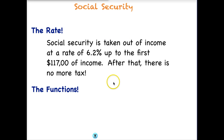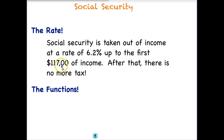Let's look at the rate. You've looked this up in a previous lesson, but the Social Security rate is taken out of income at 6.2%. Basically anything you make is taxed at 6.2%, and that is only up to the first $117,000 of income. So anything you make that's more than $117,000, you get no more tax. Say you made $120,000 — $3,000 of that income would not be taxed at all. So what we want to do is write a piecewise function to represent that.